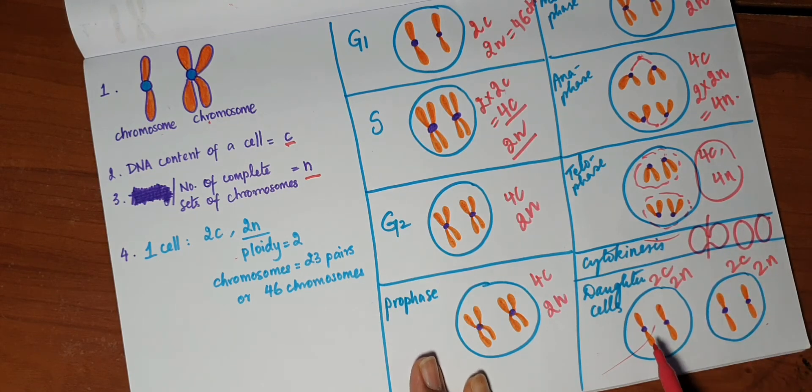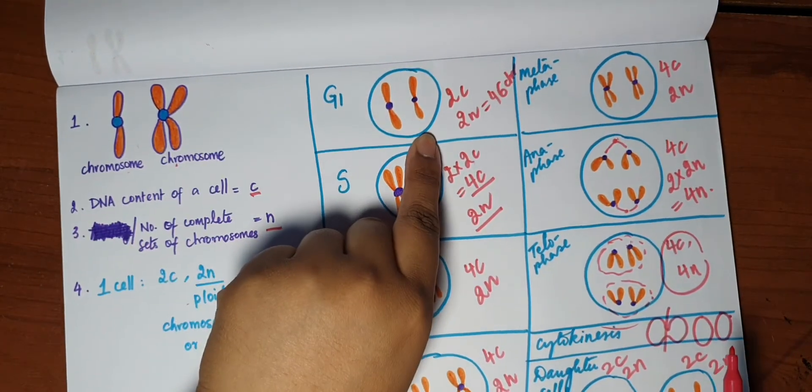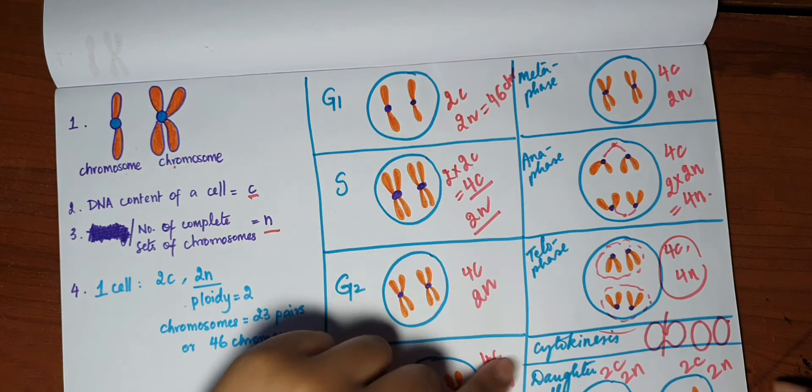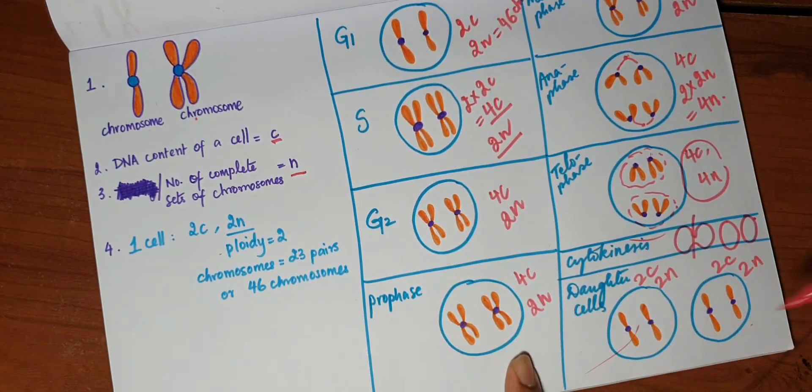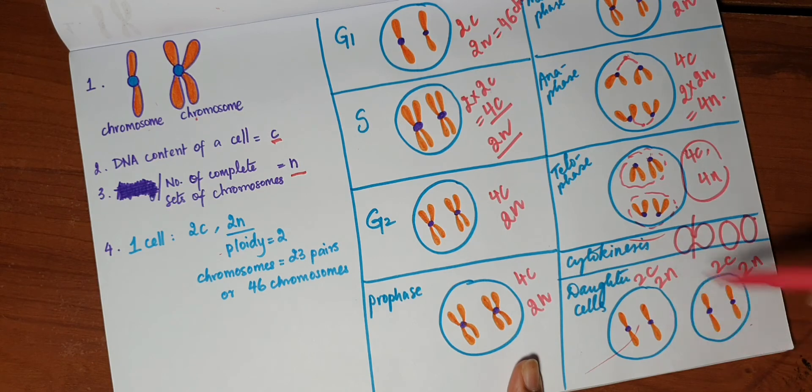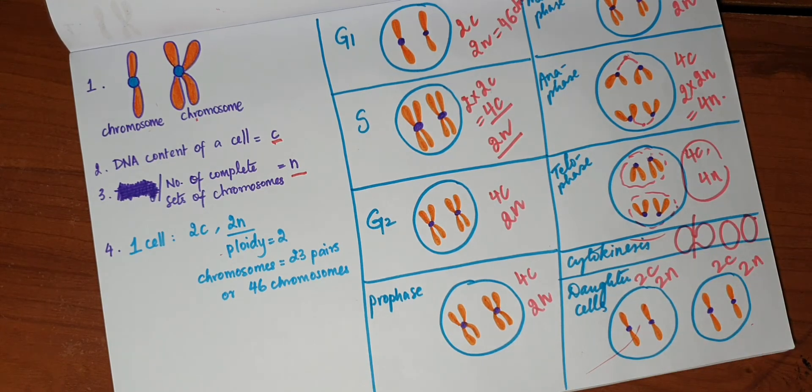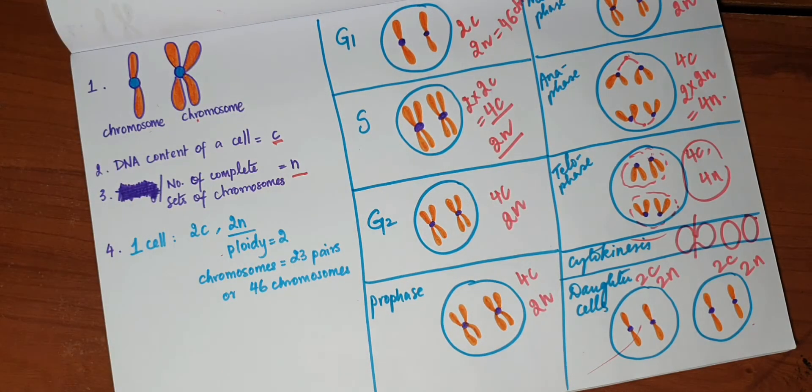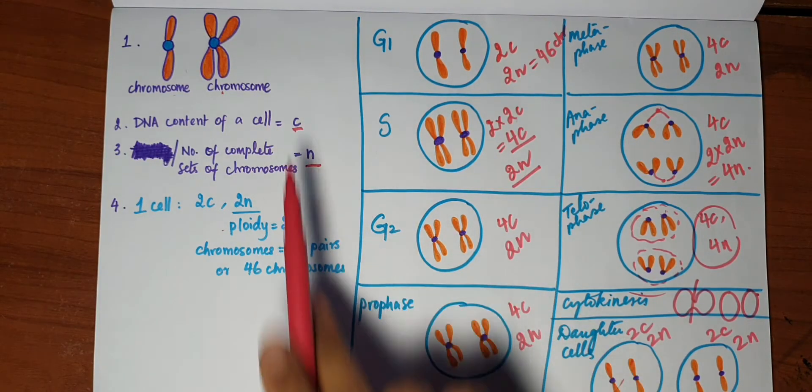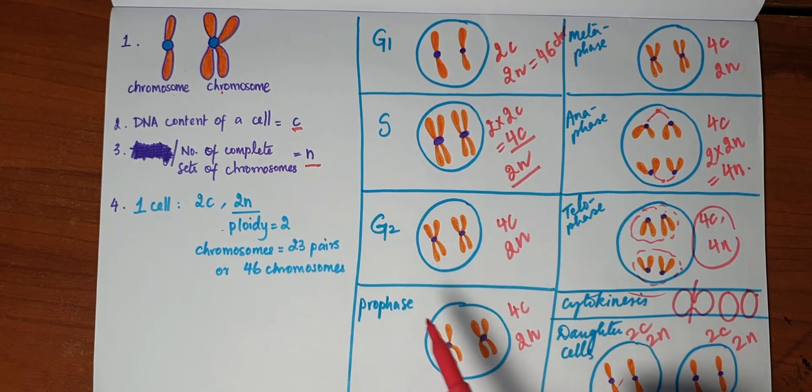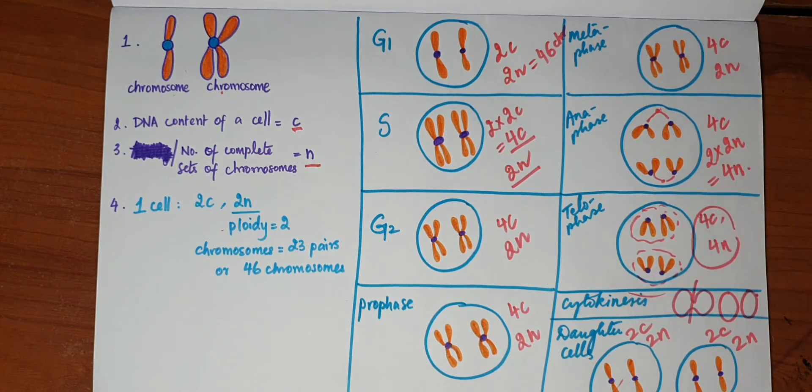So we started out with 2c and 2n amount of information. We started out with a chromosome with one chromatid. At the end of mitosis, the ploidy has been maintained and we have the same amount of chromosomes. So we have 2c and 2n. So these are the four things that you always need to keep in mind, whether it's with regards to mitosis or meiosis. If you remember this, it's more than enough and you will be able to work this all out on your own.